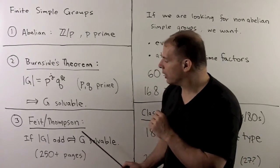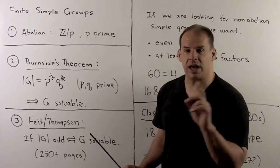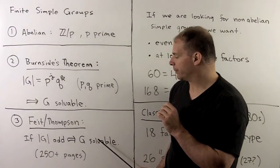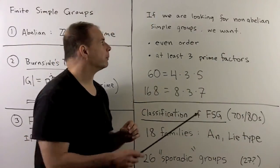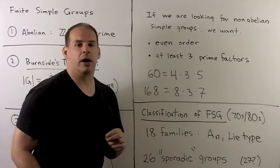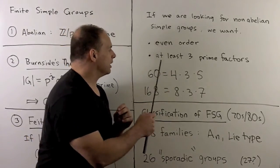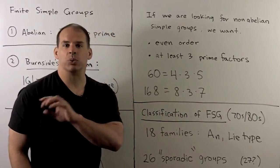So note, what does this say? Well, this says if I have a simple group that's not abelian, then its order has to be even. Let's put these together and look at some small numbers. So if I want a finite simple group that's not abelian, Burnside says we need at least three prime factors. Feit-Thompson says we need even order.